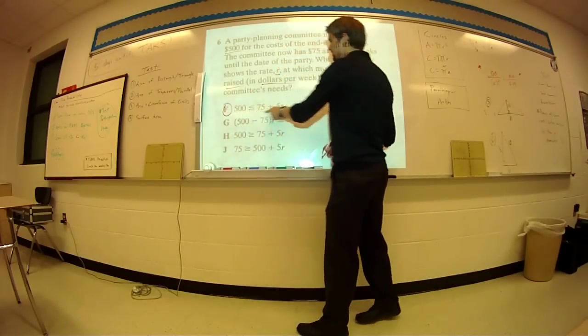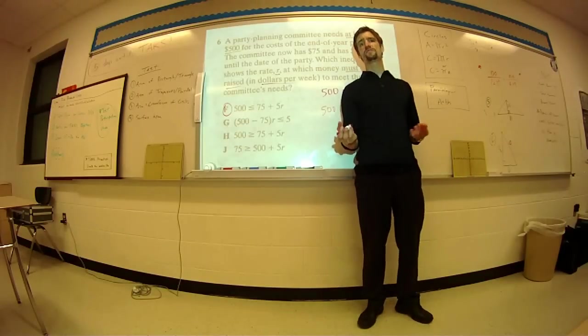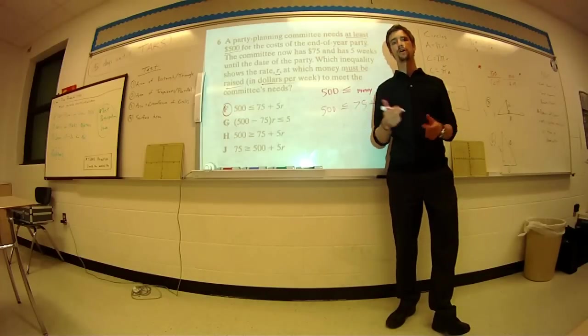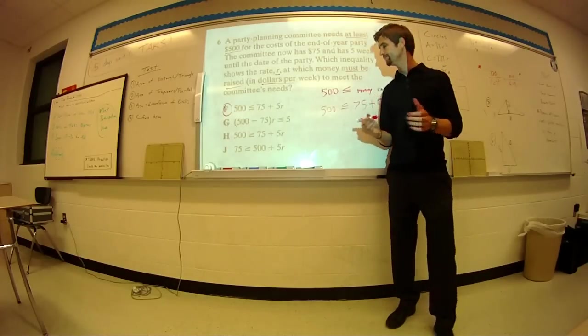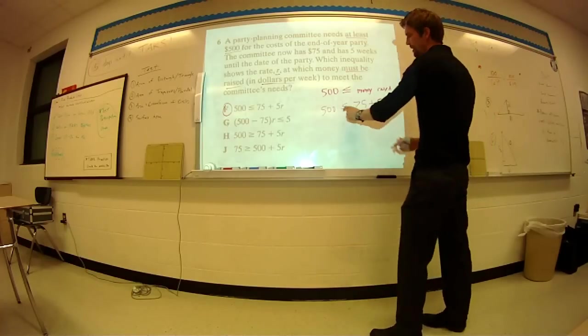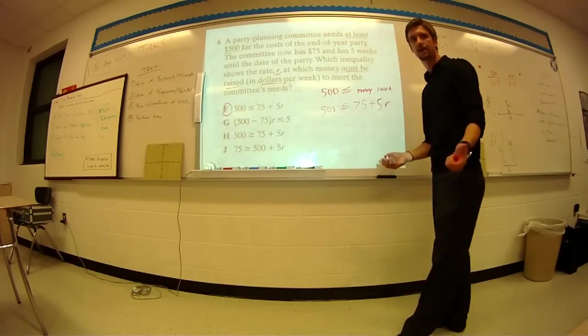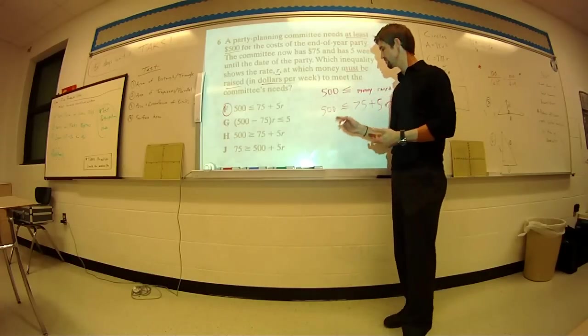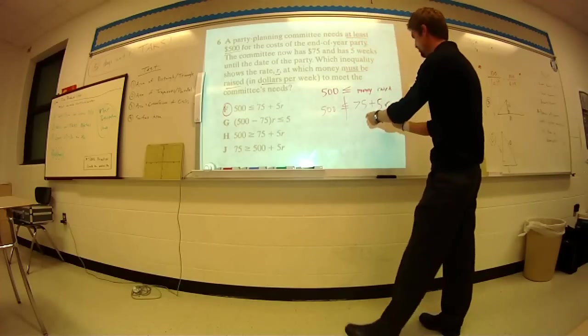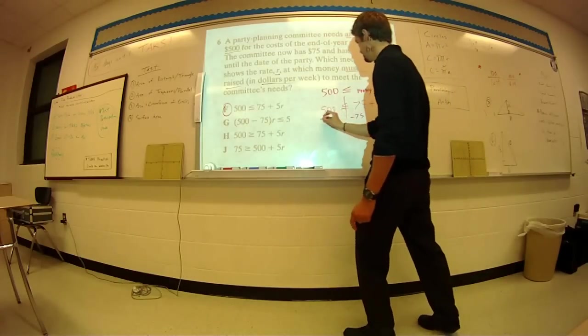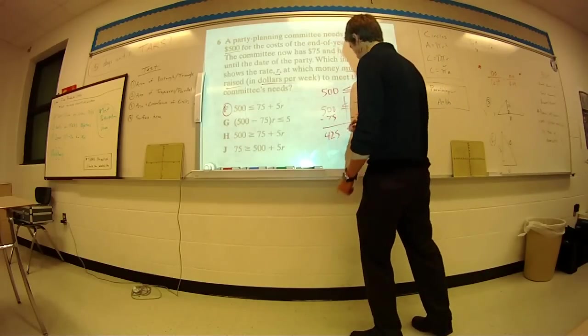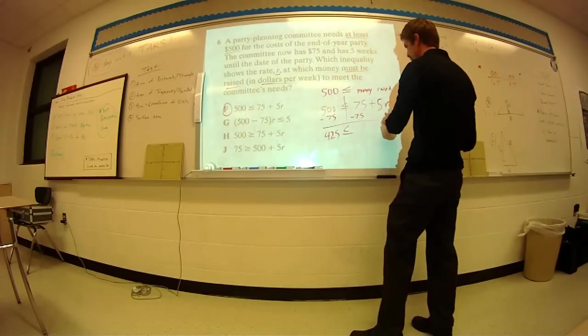Now let's find the R. The first thing we need to do is get the R alone. We handle this just like an equal sign. So if you want to be... I'll be real precise for this one since you haven't seen me solve this. Same thing. Divide it into two parts right here. You're going to subtract $75 from both sides. $500 minus $75 is going to be $425 is less than or equal to 5R.